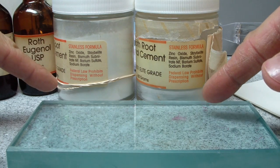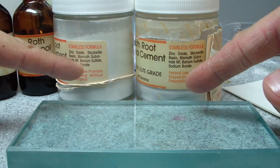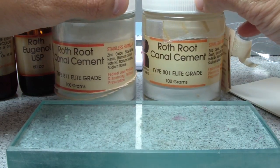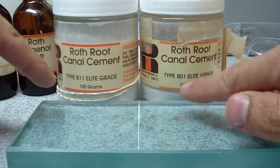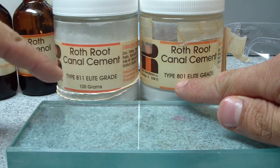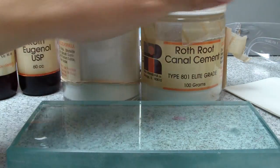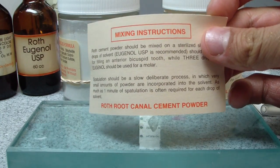Zinc oxide, stabilite resin, bismuth sub-nitrate NF, barium sulfate, sodium borate. Apparently the only difference in these two products according to the label is that there's a zero here and there's a one here. In any event, the neat thing is that until I took the tape off, I found the instructions.